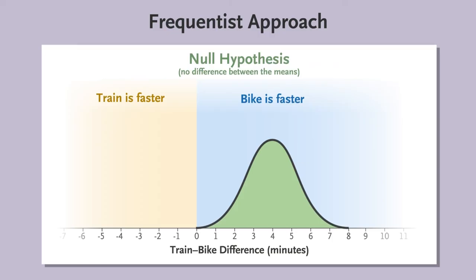With the frequentist approach, the p-value and confidence interval would have allowed you to reject the null hypothesis because biking was indeed faster, plus or minus some number of minutes.